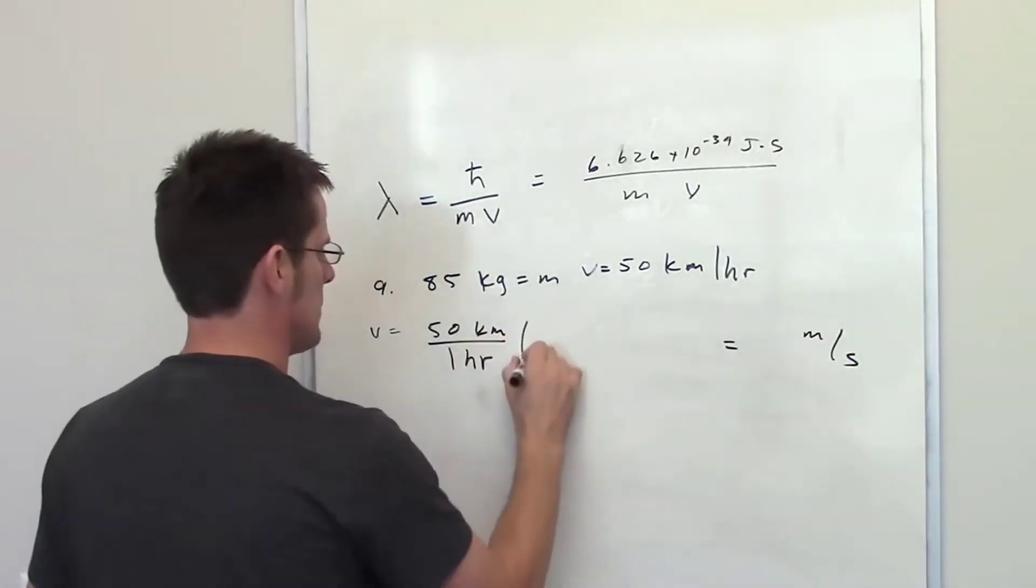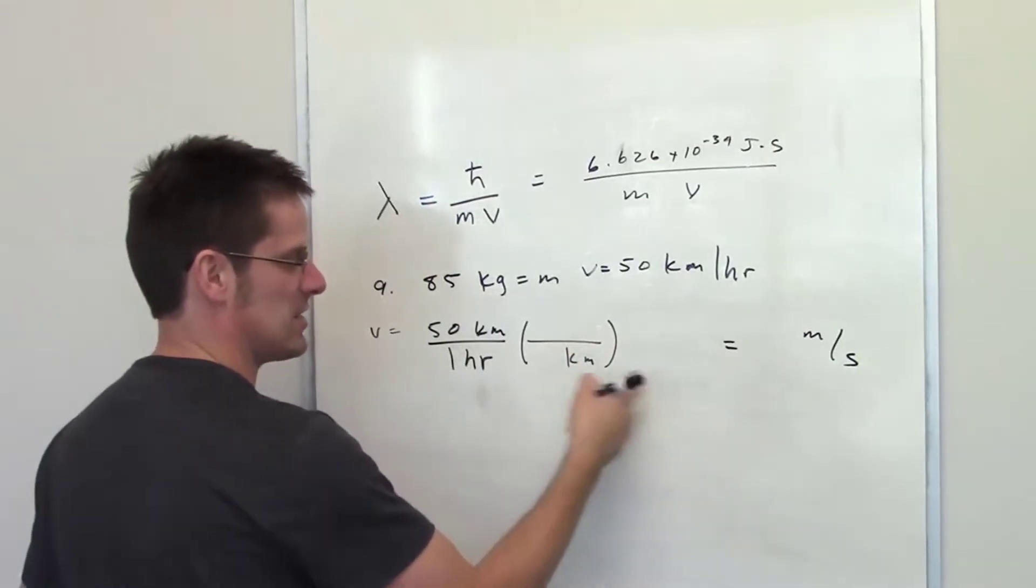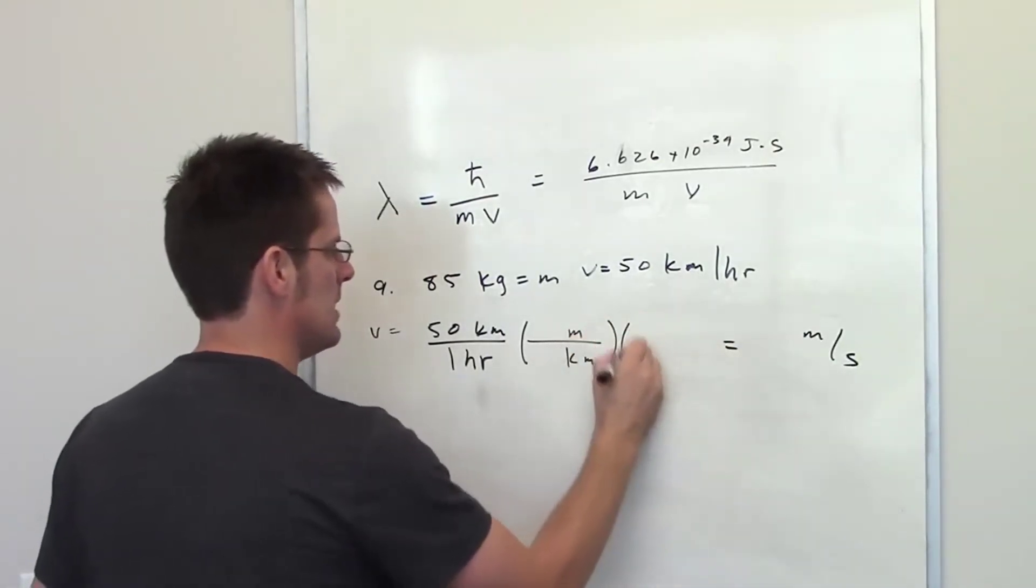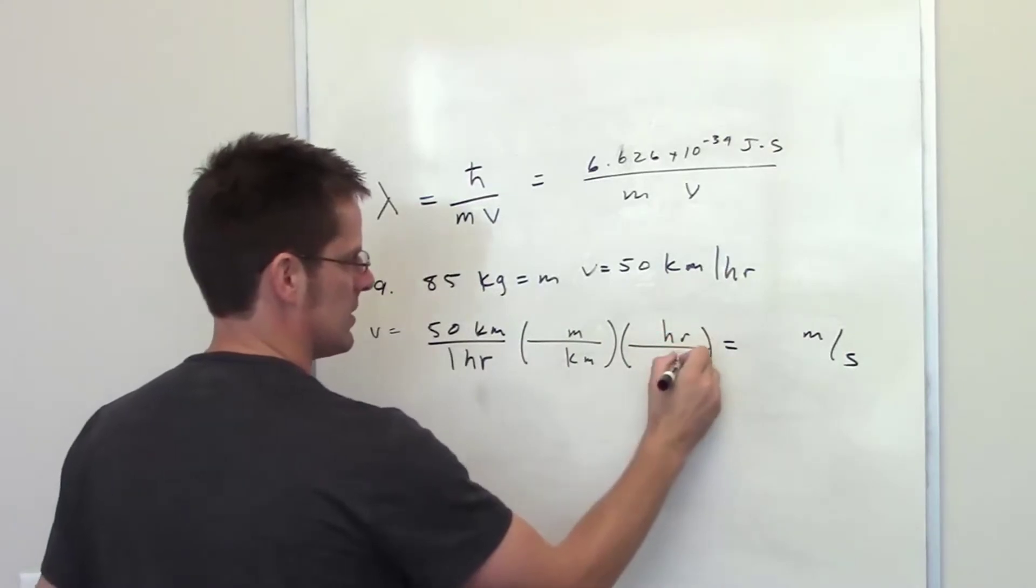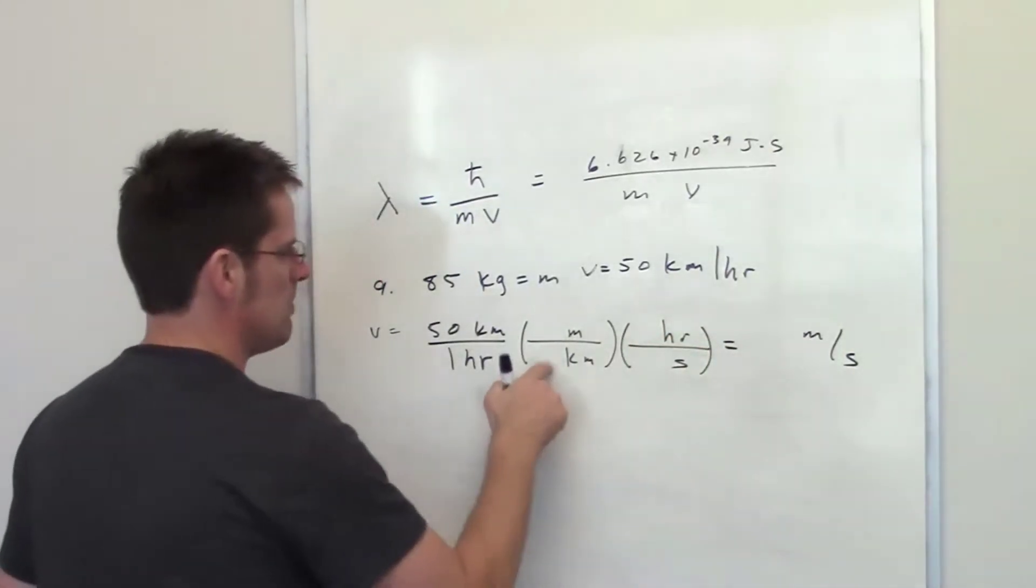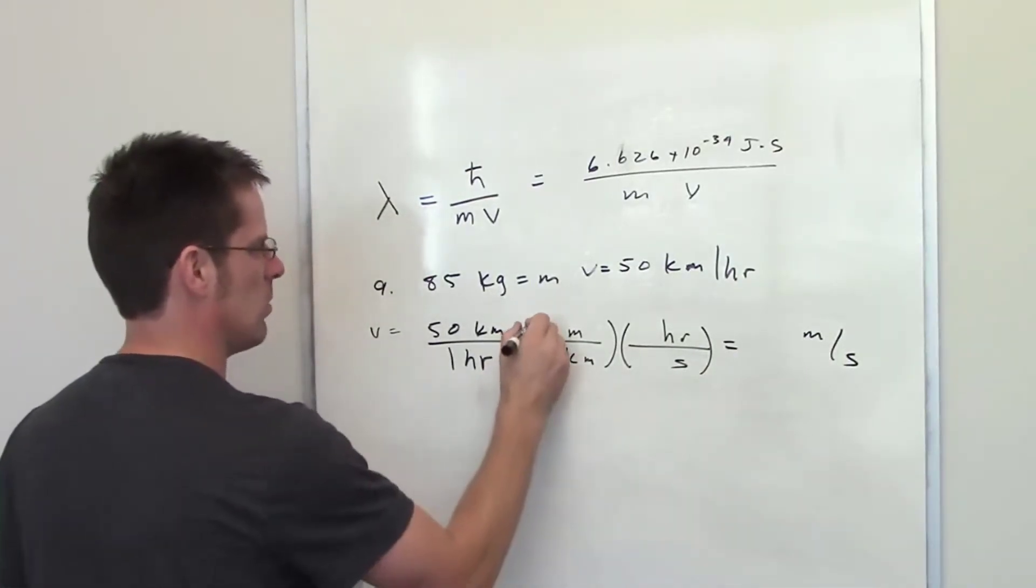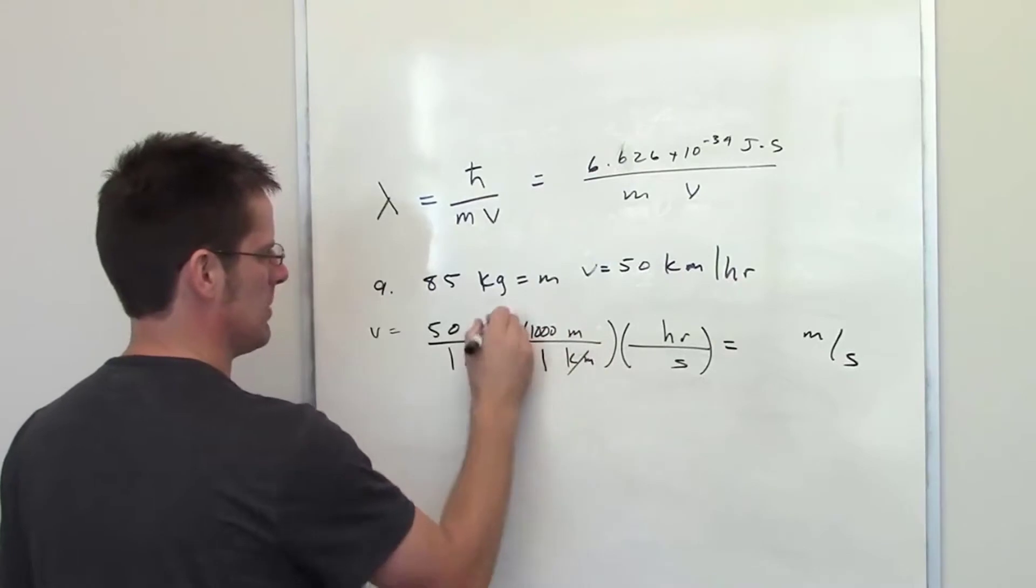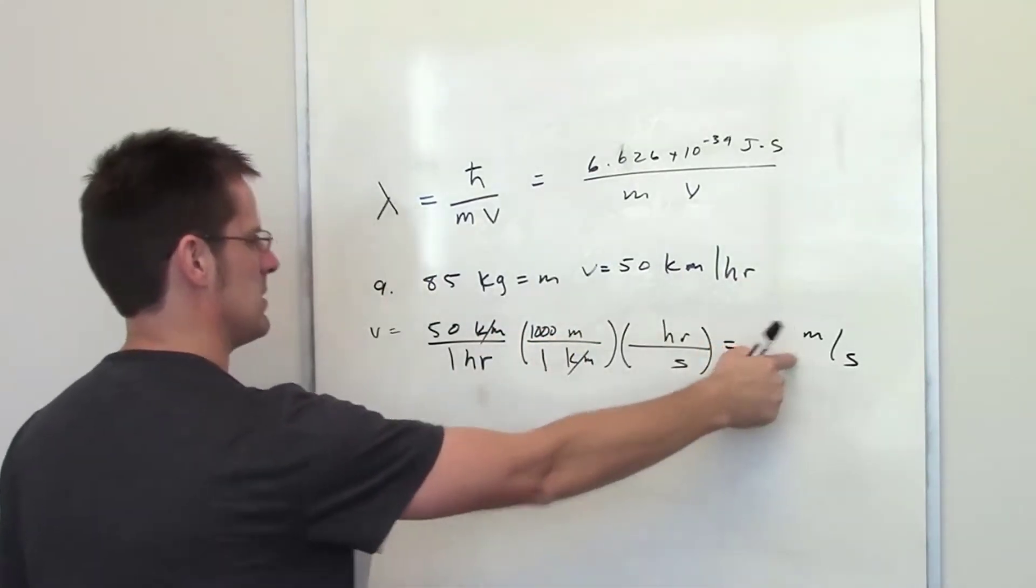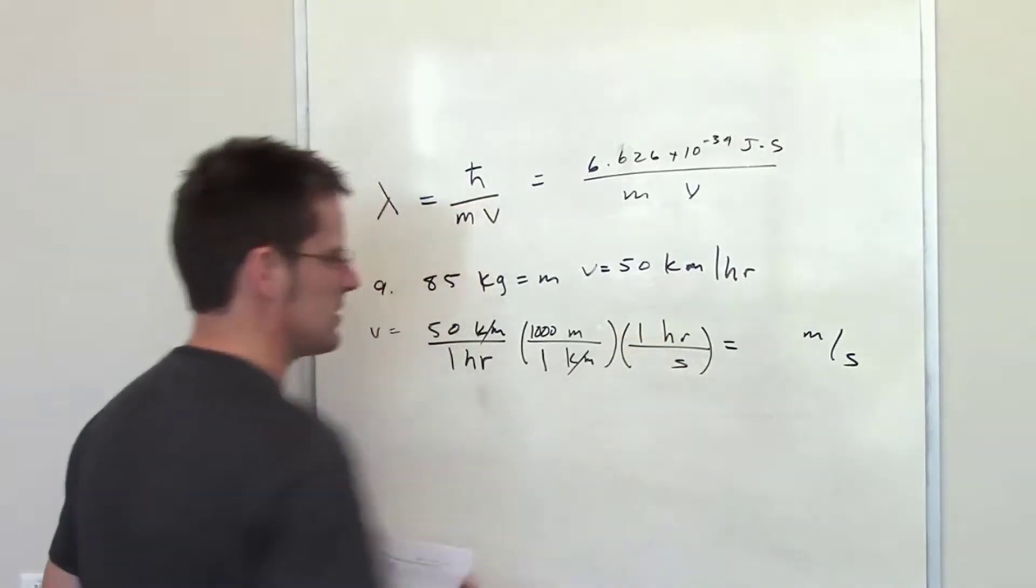I've got 50 kilometers in one hour. I want to convert it into meters per second. I'm going to put kilometers here in the denominator. Can I directly relate that to meters? Absolutely. If I've got one kilometer, there are 1,000 meters in it. The kilometers kill each other, I'm left with meters.